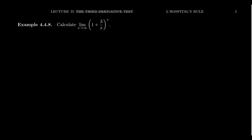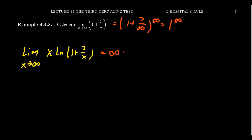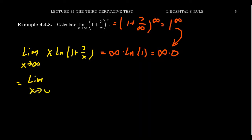Let's do one last example: the limit as x approaches infinity of (1 + 3/x) to the x. Plugging in infinity gives 1 plus 3 over infinity — which is 1 — raised to the infinite power, so this is the 1 to the infinity form. What we do is bring down the exponent using a natural log, computing the limit of x times the natural log of (1 + 3/x) as x approaches infinity. Then we push x into the denominator, giving the natural log of (1 + 3/x) over 1/x.